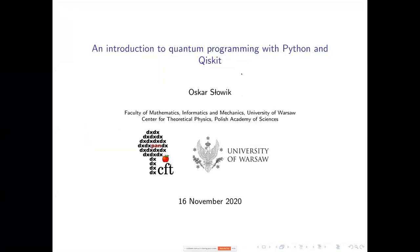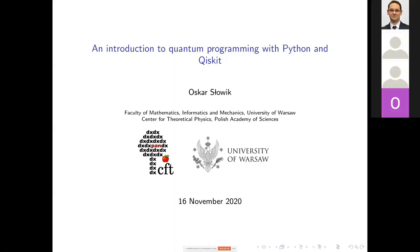We can see your slides now, so we can start. My name is Oskar Słowik and I'm a math student at the Faculty of Mathematics, Informatics and Mechanics, fifth year, at the University of Warsaw, and a first-year PhD student at the Center for Theoretical Physics at the Polish Academy of Sciences. My work is mainly related to mathematical physics and the mathematical underpinnings of quantum computing and quantum information theory. I started using Qiskit in 2017 when I was writing my thesis in computer science.